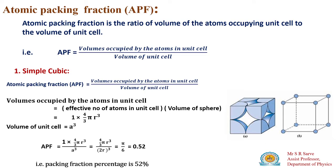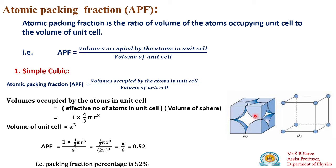Today we are going to learn what is atomic packing fraction. Atomic packing fraction means how much of a unit cell is packed. If you observe a crystal structure, you will find that some regions are vacant — it is not completely filled. There is some vacant space in a unit cell. For a simple cubic unit cell, it is 52 percent packed and 48 percent vacant, so its atomic packing fraction is 52 percent.